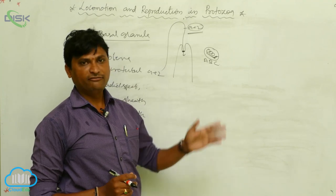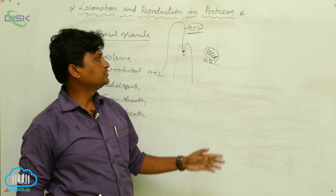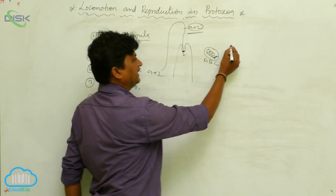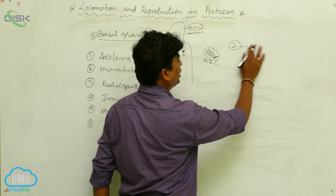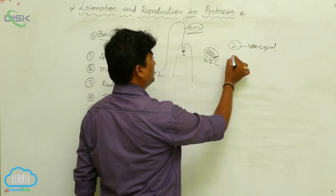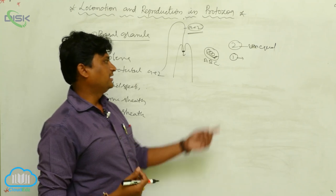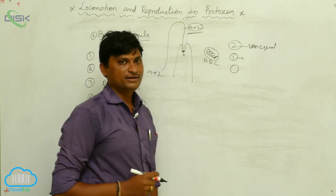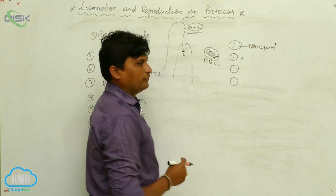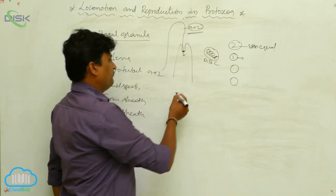Now we discuss how many flagella are present in which organisms. For example, Euglena has two flagella, which are unequal. Trypanosoma consists of one flagellum, which starts from the posterior part of the body. Giardia has four flagella. Trichomonas consists of four pairs of flagella. These represent the number of flagella in various organisms.